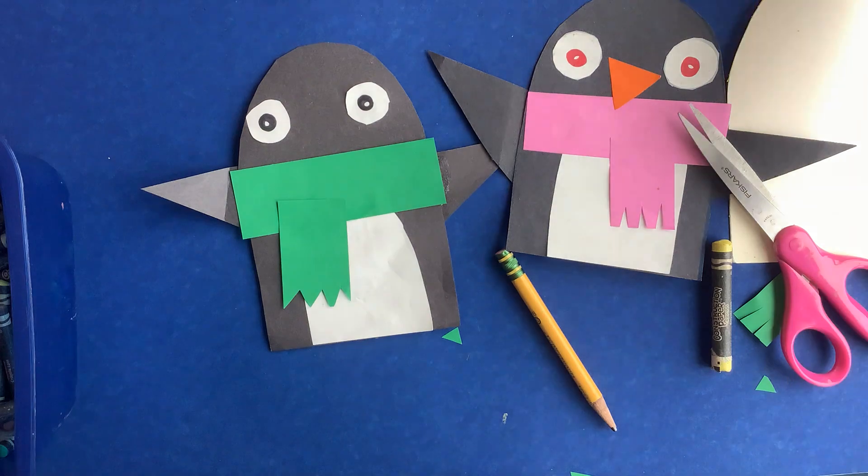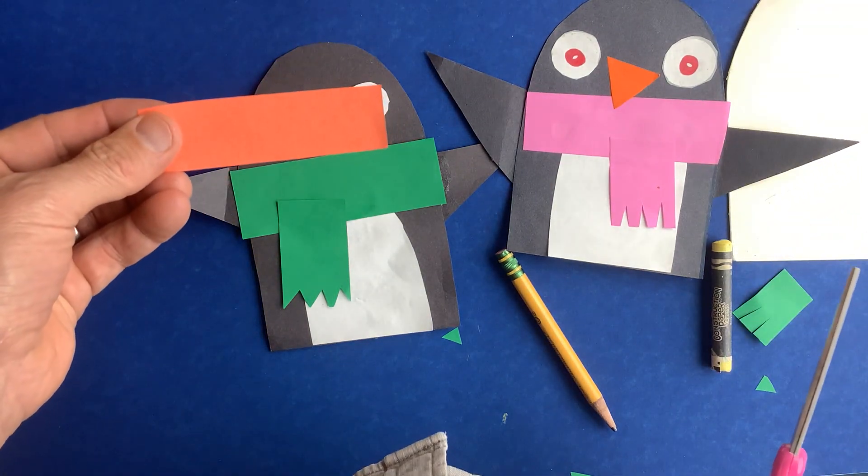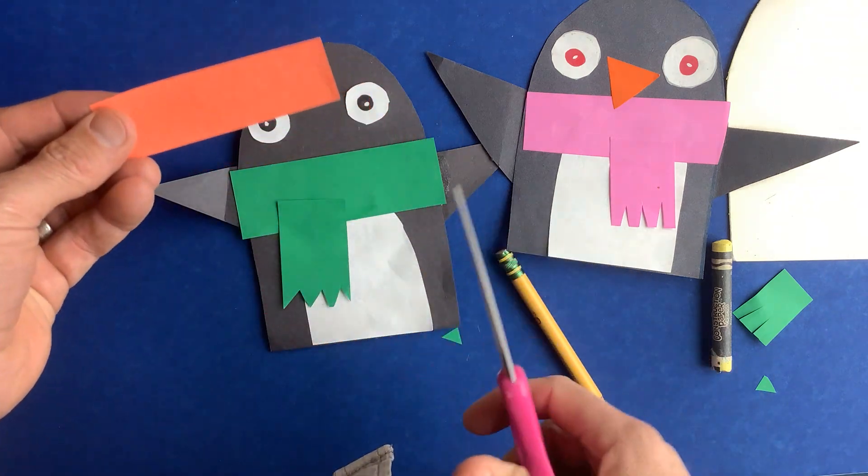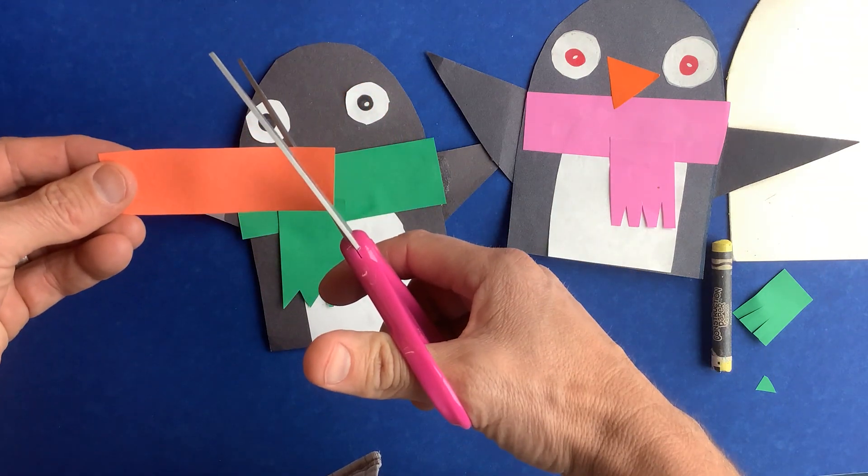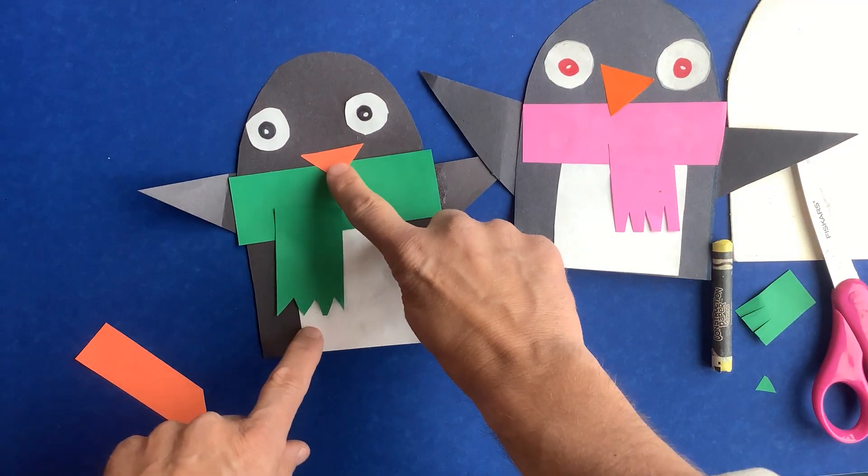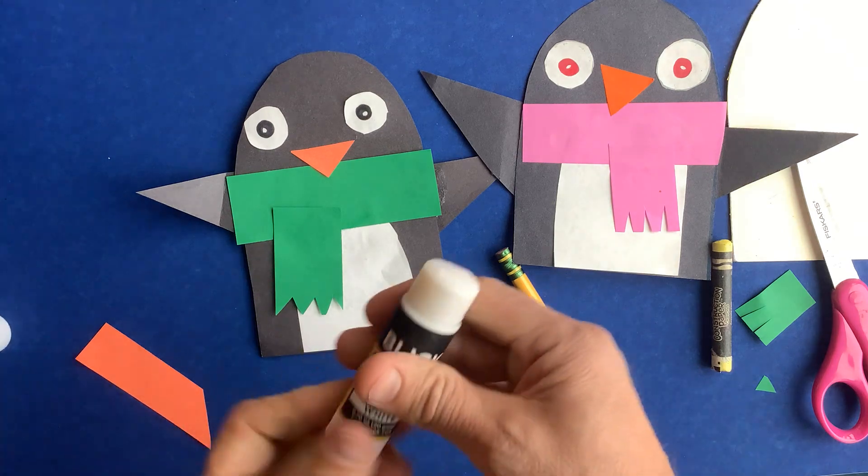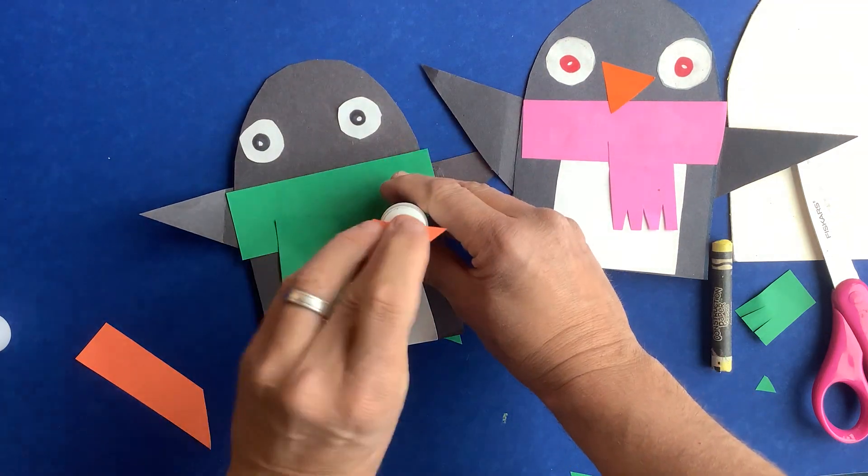They're gonna be getting little pieces of orange paper. You can either draw a triangle on there or simply snip off the corner and there's your beak. I would hold it like a rocket ship for this part.